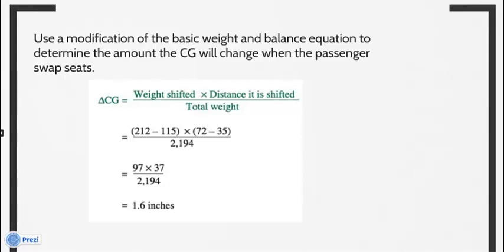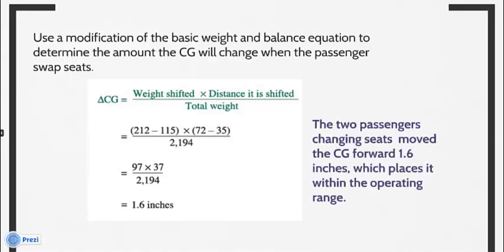Substituting the values: (212 minus 115) times (72 minus 35), all over 2,194. This simplifies to 97 times 37 over 2,194, giving an answer of 1.6 inches. The two passengers changing seats move the CG forward 1.6 inches, which places it within the operating range. This can be proven correct by making a new chart incorporating the changes.